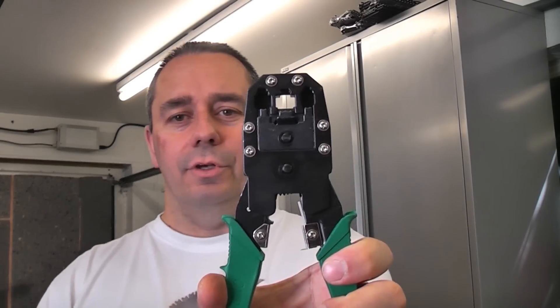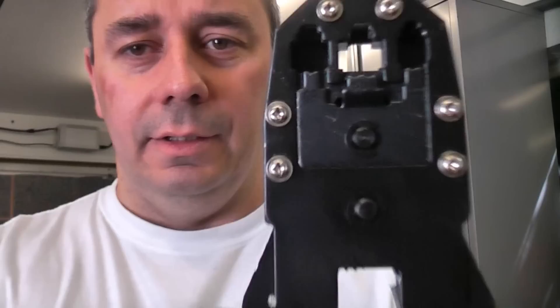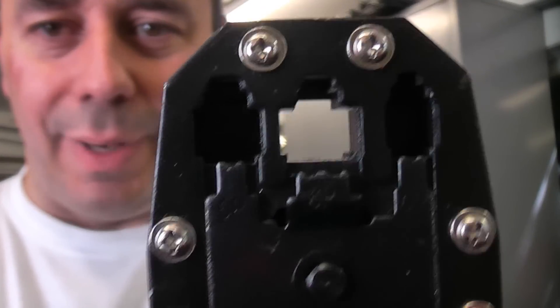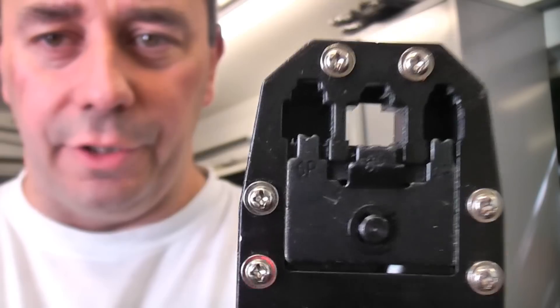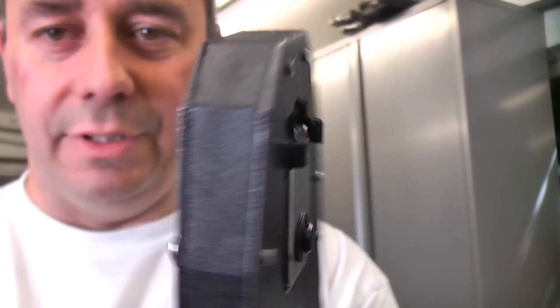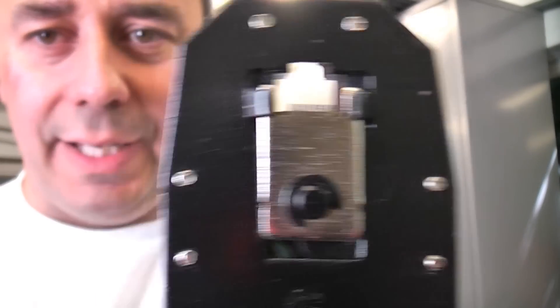In order to crimp an RJ45 connector onto the cable you're going to need a pair of crimping pliers. Crimping pliers look like that. Let's give you a close-up. That's the back side that is the part that crimps onto the outer insulation. On that side those pins actually push up the pins in the RJ45 connector.